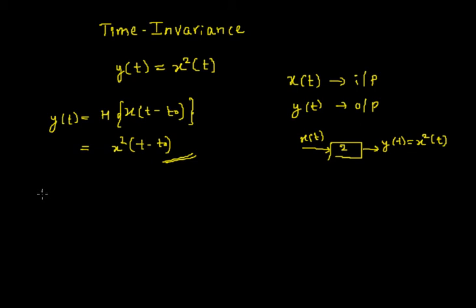Next we'll consider a shift in the output, that is, y of t minus t naught. I already have the expression for y of t. To get y of t minus t naught, I have to replace every t with t minus t naught in the expression of y of t.